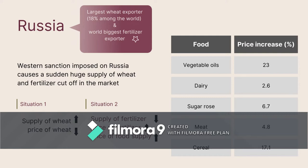According to researcher David Labord from the International Food Policy Research Institution, there is a strong positive relationship between fertilizers and food, as negative impacts on fertilizers will lead to a downturn in the production of every plantation food. As a result, food prices increased: vegetable oils surged by 23%, dairy increased by 2.6%, sugar rose by 6.7%, the meat index increased by 4.8%, and cereals upsurged by 17.1% month over month.